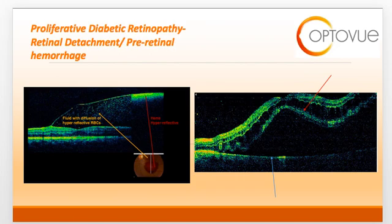Remember that neovascularization arising from the optic nerve or retina can result in the formation of pre-retinal or vitreous hemorrhage. On the left-hand side of the slide, you can see what a pre-retinal hemorrhage looks like on OCT. Recall that blood will appear hyperreflective on OCT. So you can see the pre-retinal hemorrhage appears as a pronounced area of hyperreflectivity within the vitreous. The small hyperreflective dots are blood suspended within the vitreous cavity.